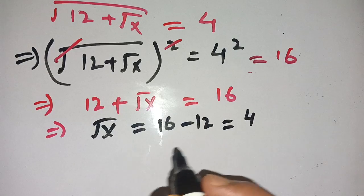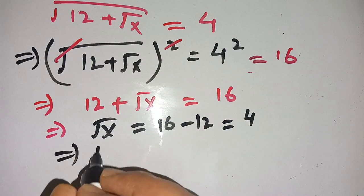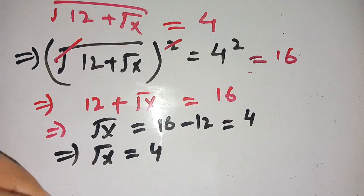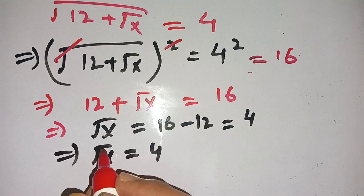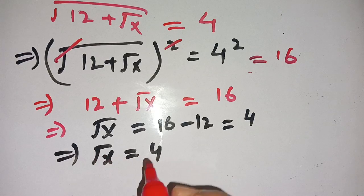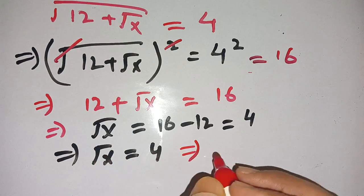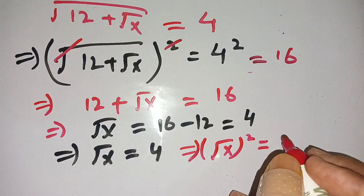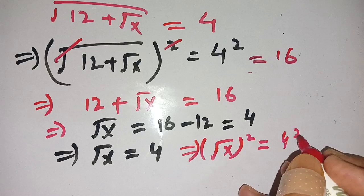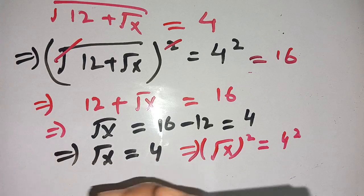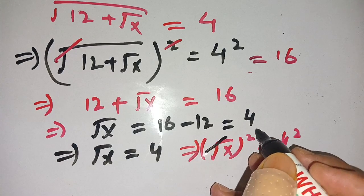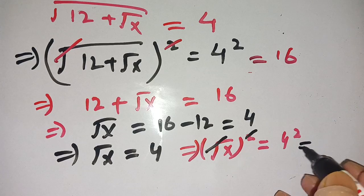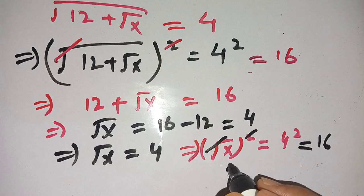Thus square root of x is equal to 16 minus 12, which equals 4. To find the value of x, we square both sides: square root of x whole squared equals 4 squared. The square and square root cancel out, giving x equals 4 squared, which is 16.